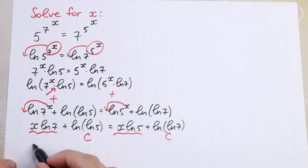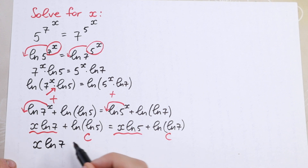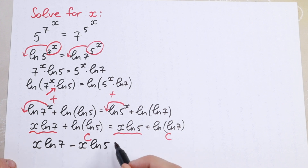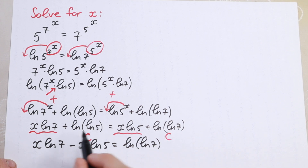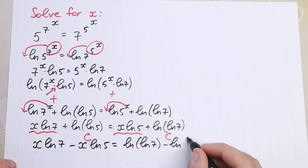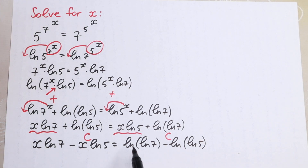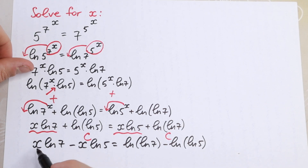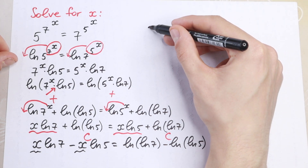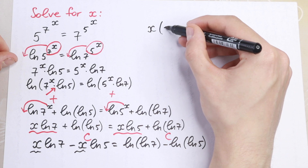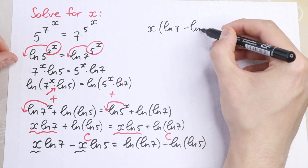We now have an expression with x terms and constants. Let's bring all constants to the right hand side and all x terms to the left. So we have x times natural log 7, and bringing x times natural log 5 to the left with a minus sign: x natural log 7 minus x natural log 5 equals natural log of natural log 7 minus natural log of natural log 5. We can factor out x to get x times natural log 7 minus natural log 5.